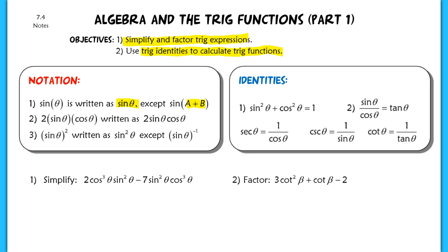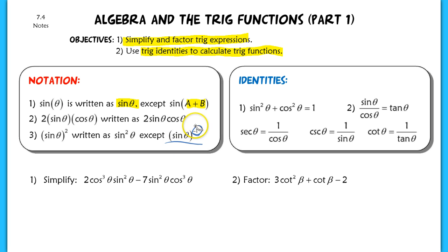Whenever you're raising sine, cosine, or any trig function to a power, instead of writing the entire expression squared, we write it commonly as sine squared theta. That pattern extends to cubed or fourth power as well — sine cubed theta, and so on. The one exception is the negative first power, which is read as the inverse of sine. That's the only case where we don't use this notation.